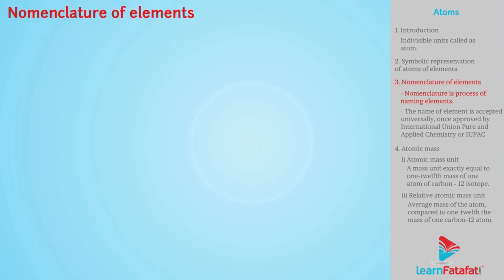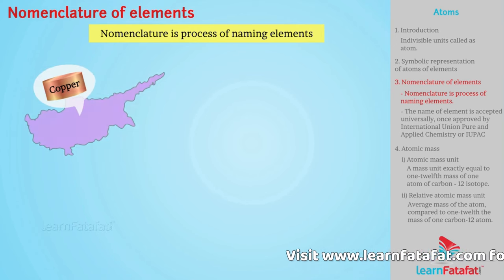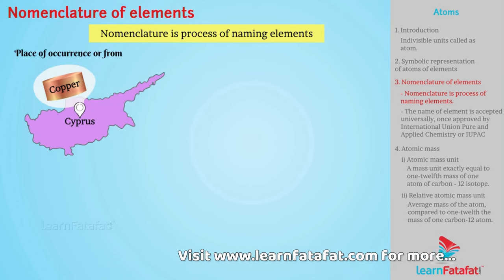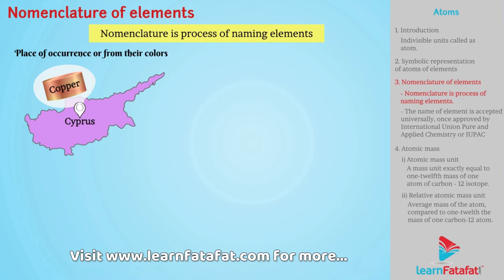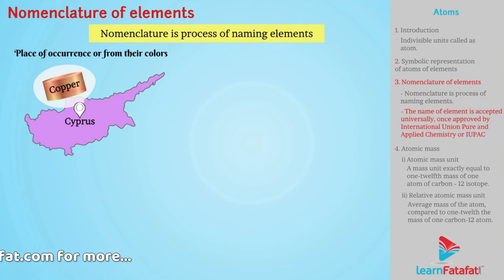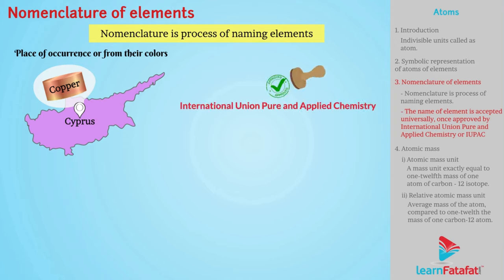Nomenclature of elements. Nomenclature is process of naming elements. Names of elements are often derived from their place of occurrence or from their colors. Once the name of element is approved by International Union of Pure and Applied Chemistry, i.e., IUPAC, it is accepted universally.